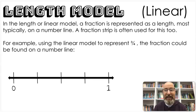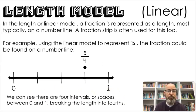The next model we want to look at is the length model. It's also called the linear model. In the length or linear model, a fraction is represented as a length, most typically on a number line. A fraction strip is often used for this too. You may make fraction strips and fold them up in the different lengths. That's actually a length or linear model too. For example, using the linear model to represent three-fourths, the fraction could be found on a number line. And I want you to see a number line. It starts at zero and it goes to one. Three-fourths is bigger than zero, but it's smaller than one. It's not a whole yet.